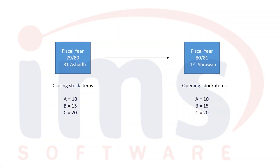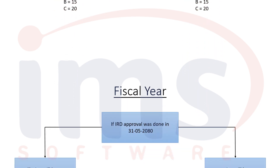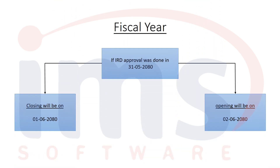The closing stock of the previous accounting period is posted as the opening stock of the next fiscal year. Additionally, closing stock available at the starting date of software installation could also serve as the opening stock.